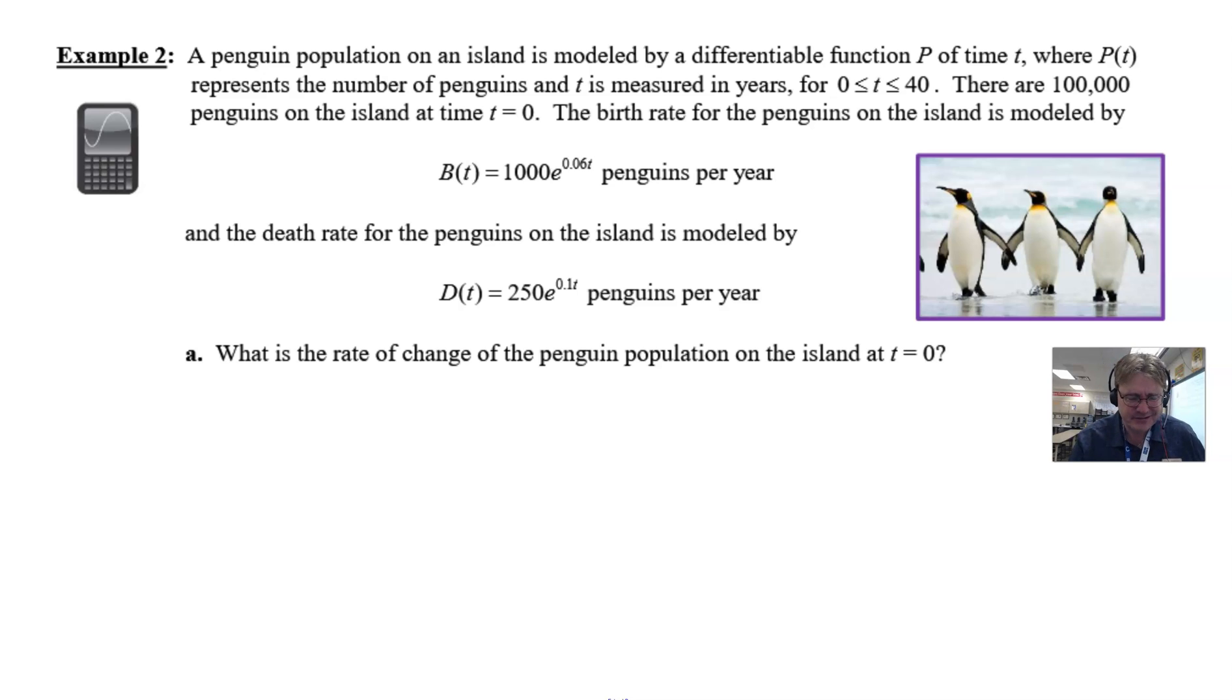Unfortunately, penguins do have to sometimes meet their demise, and so we have a death rate for the penguins on the island that's modeled by D(t) = 250e^(0.1t) penguins per year. All that we have to do is address this one question: What is the rate of change of the penguin population on the island right at time t equals zero?